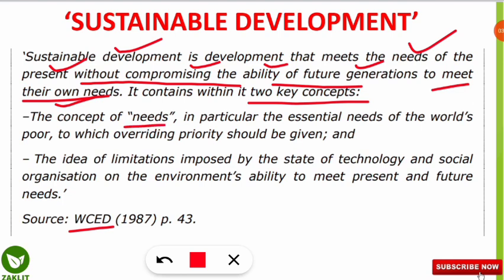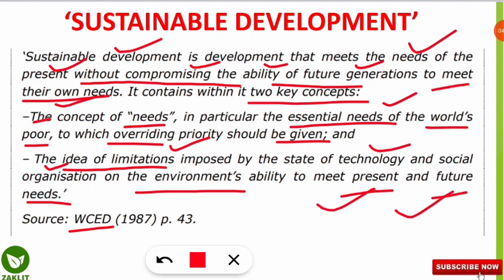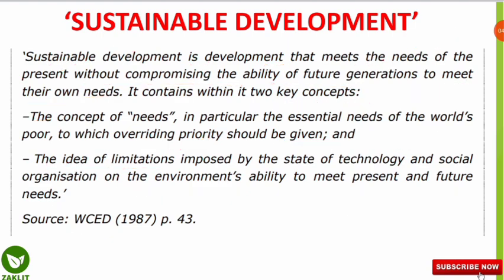The first key concept is the concept of 'need,' in particular the essential needs of the world's poor, to which overriding priority should be given. The second concept is the idea of 'limitation' — we should limit the state of technology and social organizations on the environment to meet both present and future needs, so that both generations can enjoy the benefits. This was the definition given by WCED in 1987.